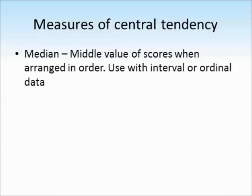Another measure of central tendency that you could use is the median. And this is the middle value of all of the scores when they are arranged in numerical order. And you can use this with interval or ordinal data. So for example with this data set here the arrow shows where the middle value would lie. So the median here would be 6.